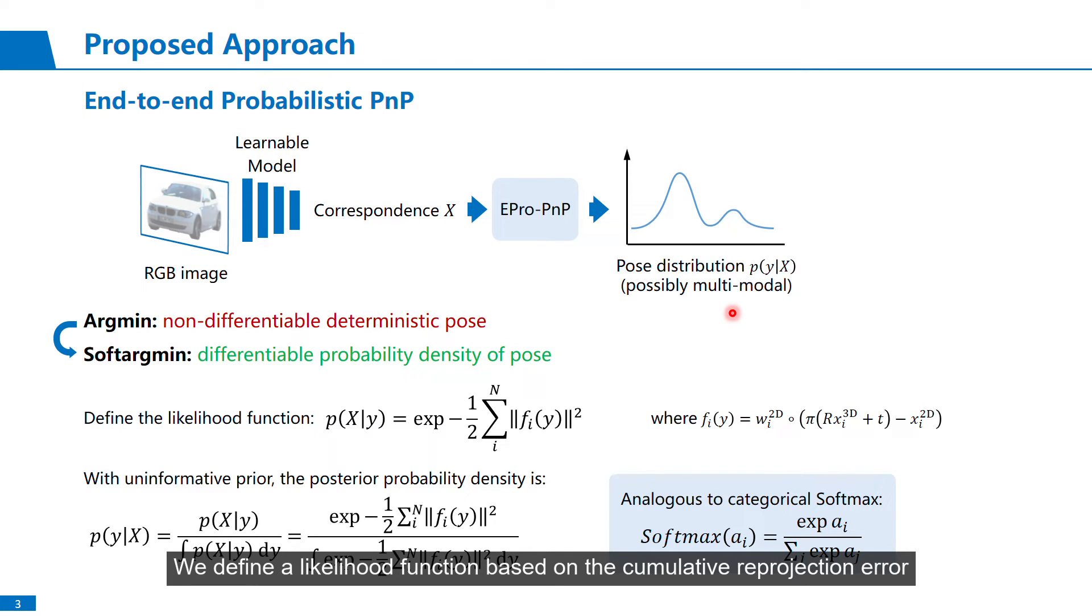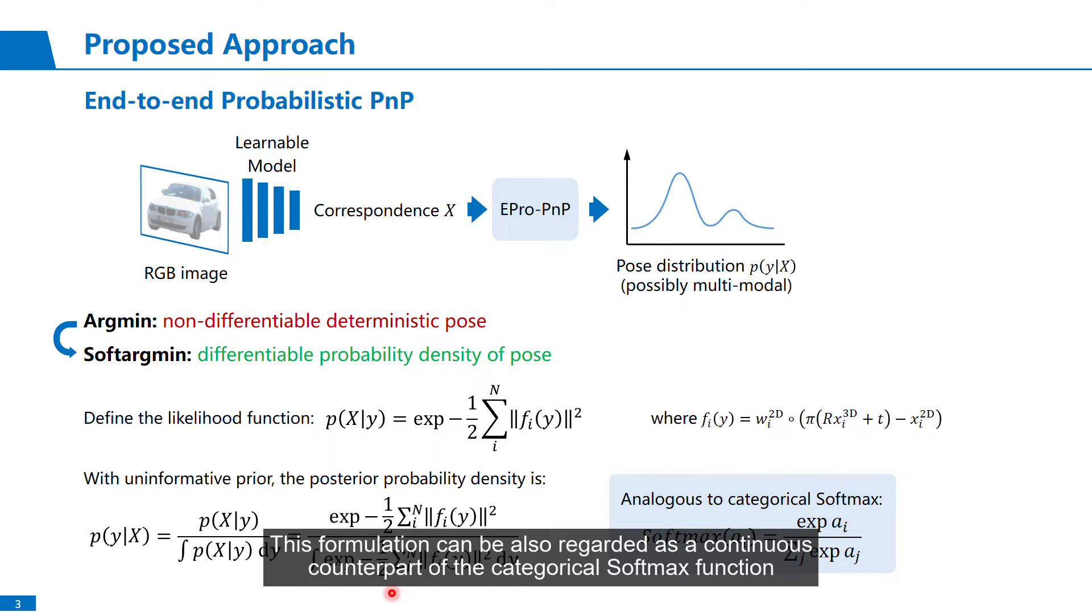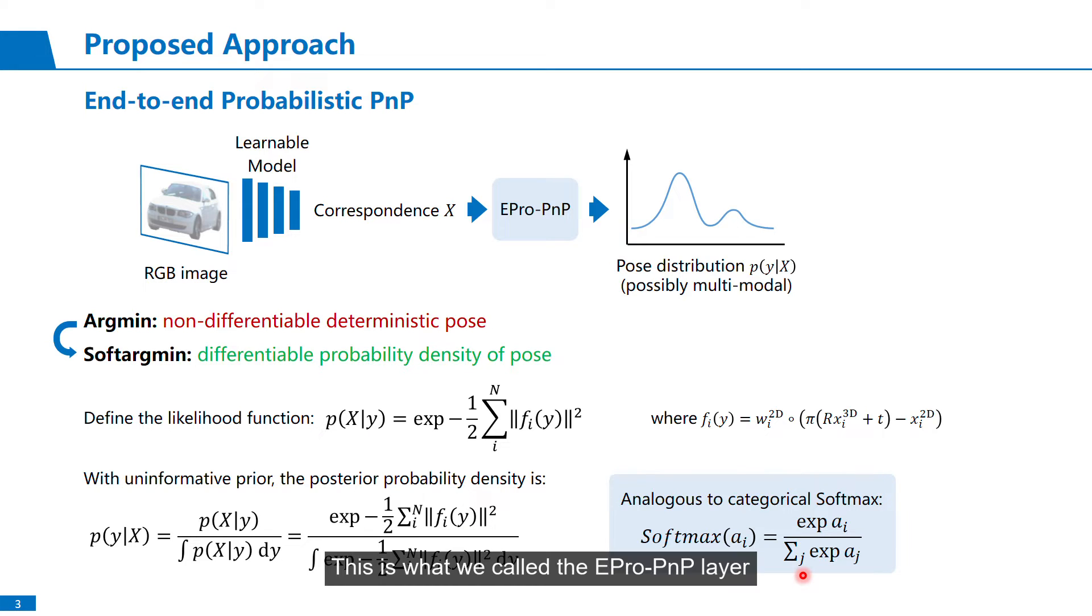We define a likelihood function based on the cumulative reprojection error, and with uninformative prior, normalizing the likelihood yields the posterior probability density. This formulation can also be regarded as a continuous counterpart of the categorical softmax function. This is what we call the EPro-PnP layer.